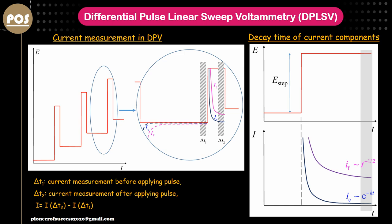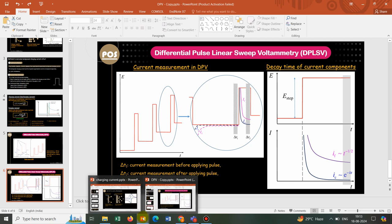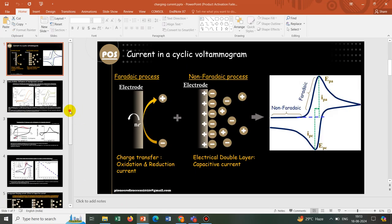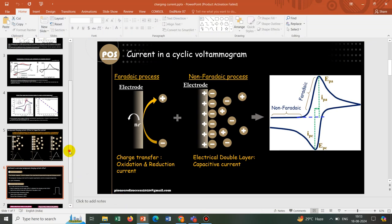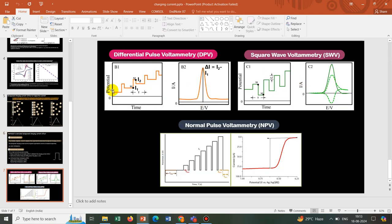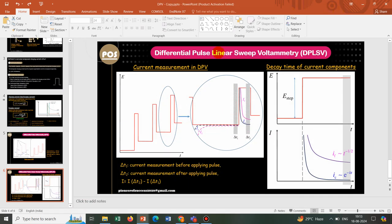This way we have information about the faradaic component only, and that is what is called DPV. The DPV response curve shows peaks wherever a faradaic reaction occurs. This is more useful than cyclic voltammetry because if you have two faradaic reactions in your system you may get two distinct peaks. We will be continuing this topic in upcoming videos. I hope this series will be helpful for you — thank you very much.